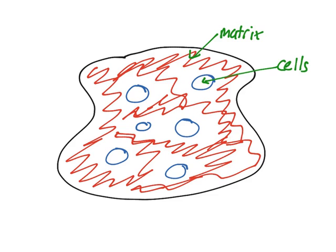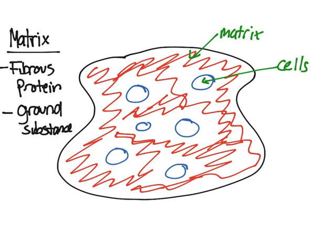Here I've drawn a small piece of tissue to illustrate this. Tissue is made up of cells and matrix. The cells are drawn in blue and labeled, and everything else is the matrix. The matrix is made up of fibrous proteins and ground substance.